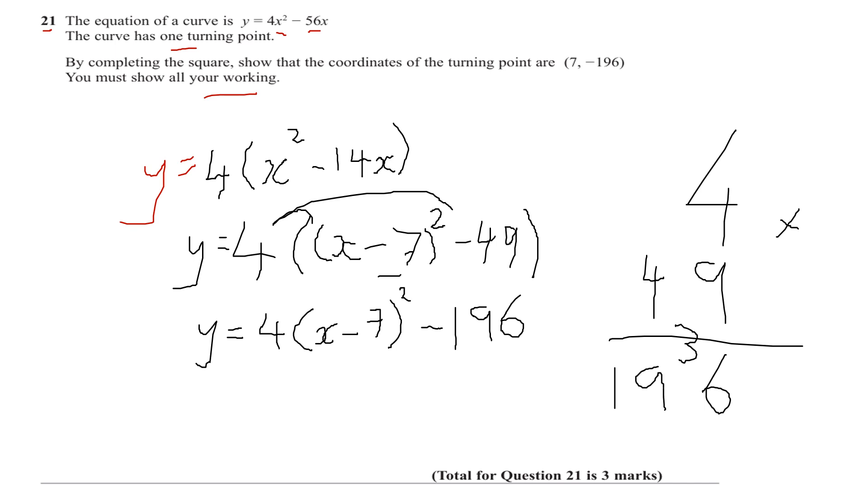This is now in complete square form, so the turning point, the minimum point. I'll flip the sign here inside the brackets, that'll be positive 7, and then the y coordinate is just the number outside with the sign, so it's 7 minus 196, which is as required or as shown.